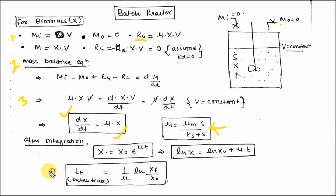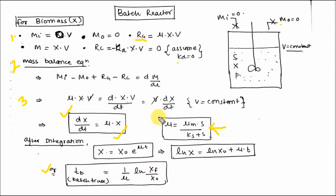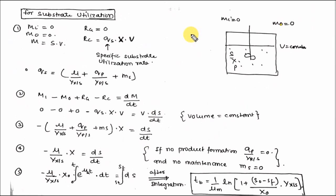From here you get the TB value — that is the batch time. TB is batch time, equal to 1 upon Mu times ln(Xf upon X₀). This is the biomass concentration formula for the batch reactor.